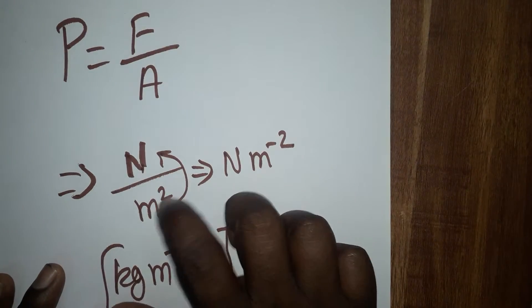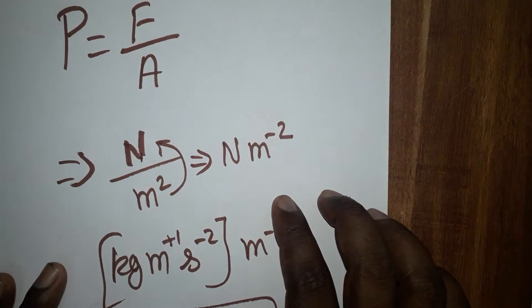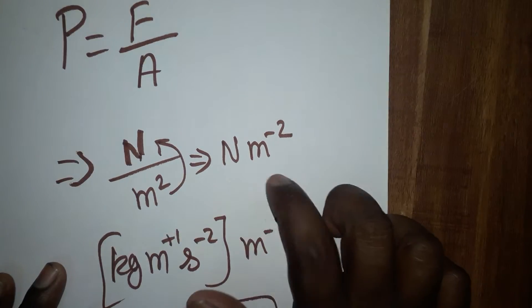Force unit is Newton, area unit is meter square. From denominator, if you take this to the numerator, Newton meter minus 2.